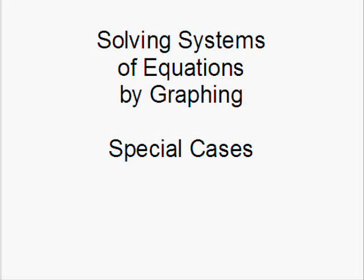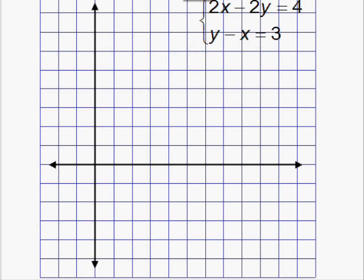This lesson is on solving systems of equations by graphing special cases. Suppose we want to solve the system of equations 2x minus 2y equals 4 and y minus x equals 3. To solve this by graphing, we would want to put both of our lines in slope-intercept form.